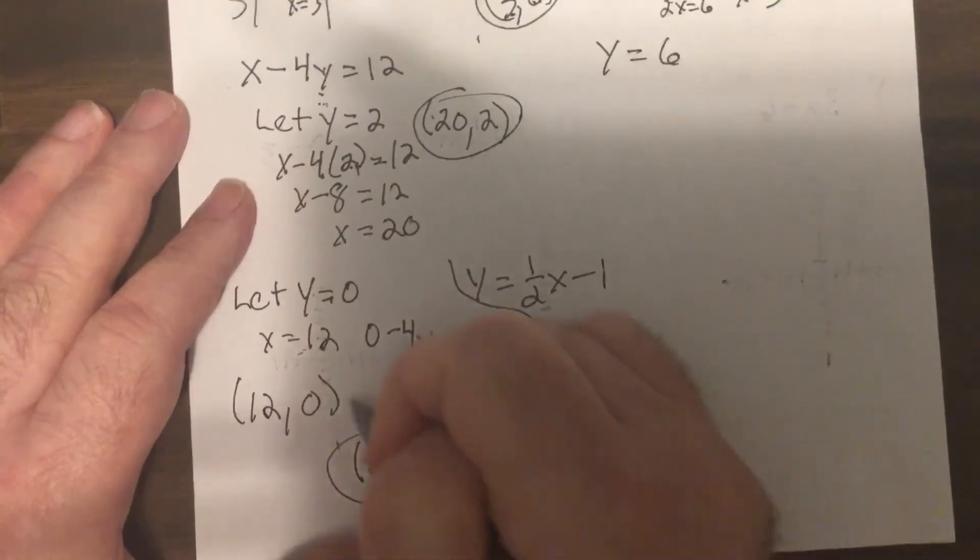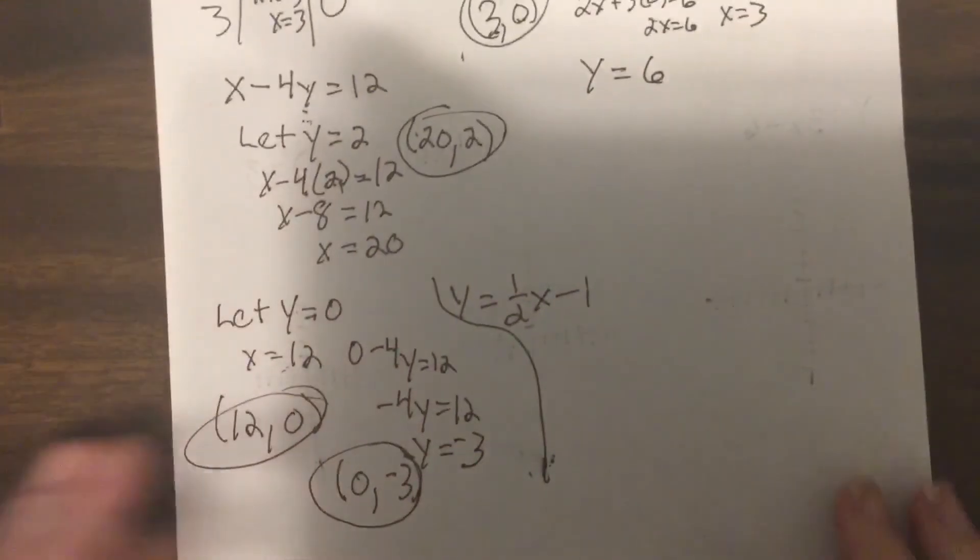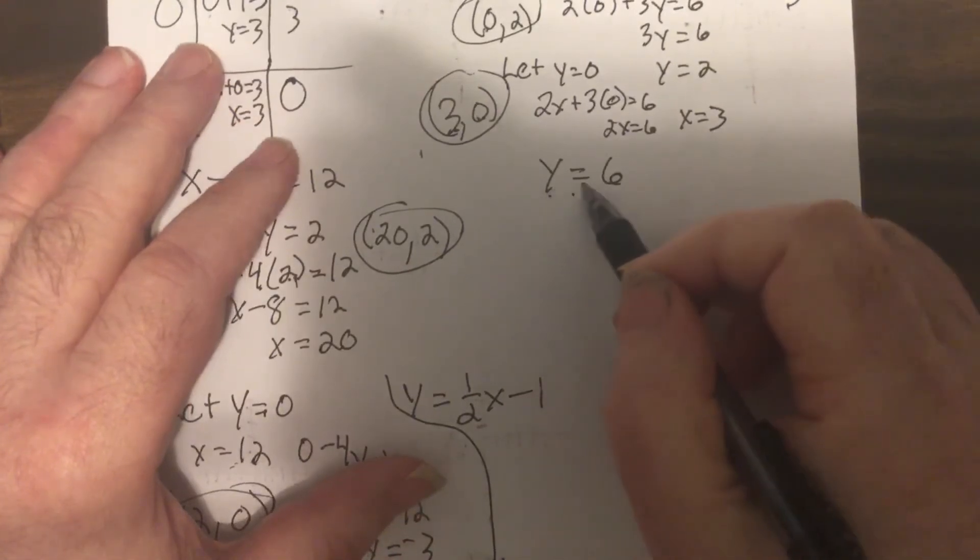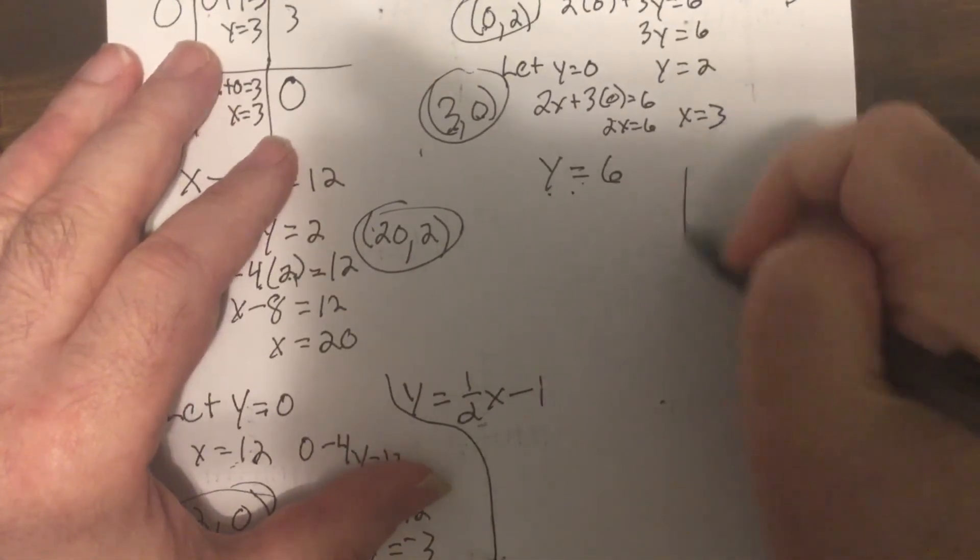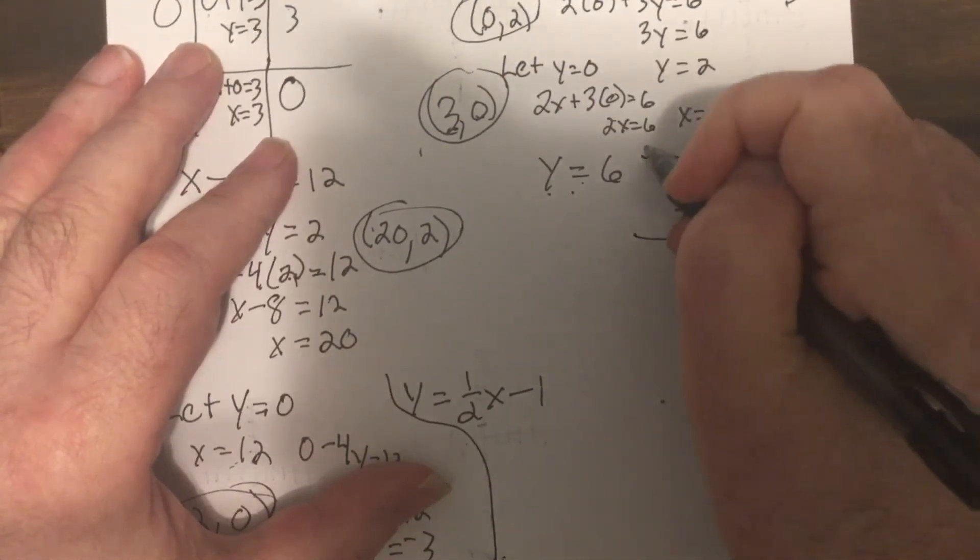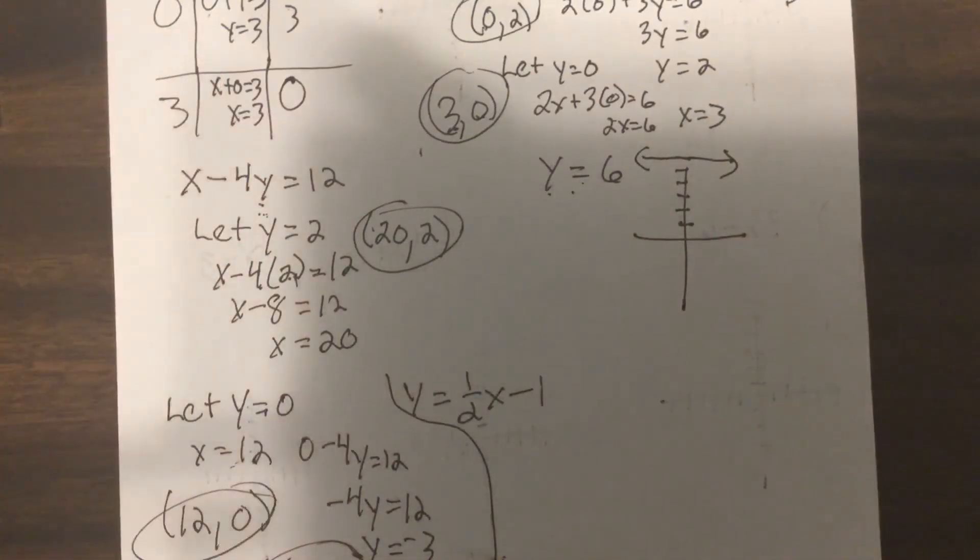Now there's an infinite number like I said. Now Y equals six, you should have memorized it's a horizontal line. One, two, three, four, five, six.